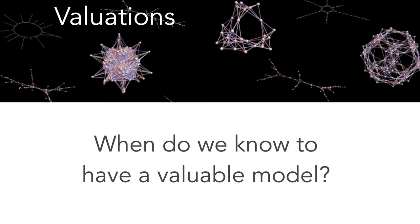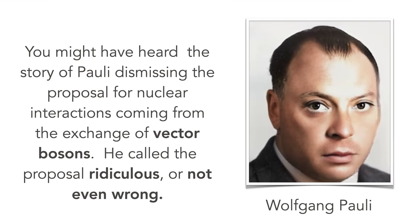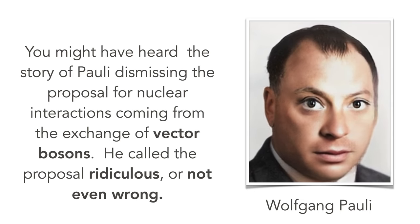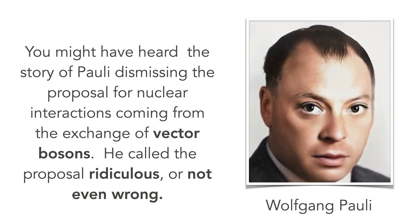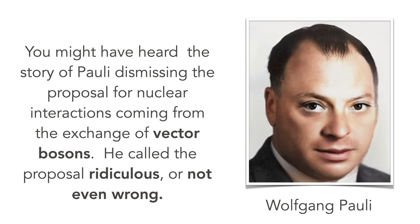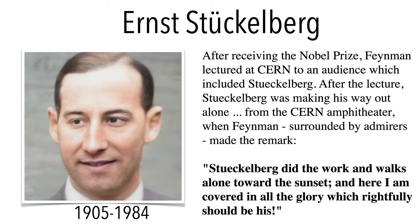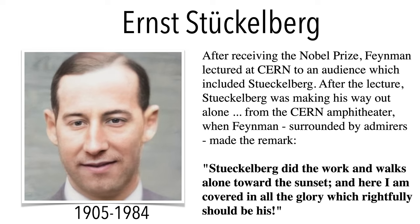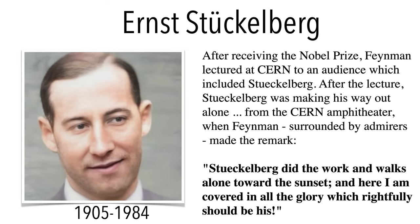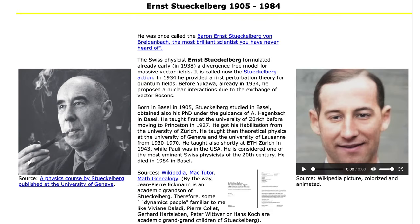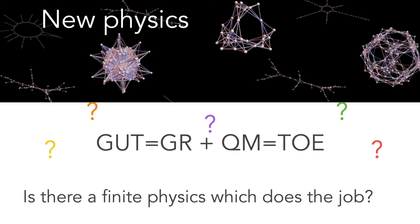If the dimension is three or larger, you cannot build a value function which is compatible with multiplication and with a function on calculus, a function on self-adjoint operators. A physicist like Dirac pointed out that the methods which theoretical physicists are using might not be the correct method. So when do we know to have a valued model? This is tricky. You might have heard about the story of Pauli dismissing the proposal for nuclear interaction coming from the exchange of vector bosons. He called this proposal ridiculous or not even wrong in his seminar. The person he put down like that was a Swiss mathematician Ernst Stueckelberg.